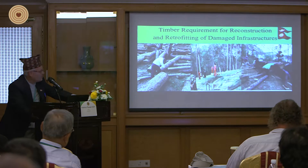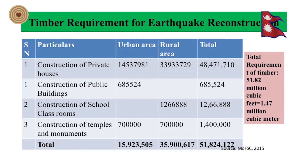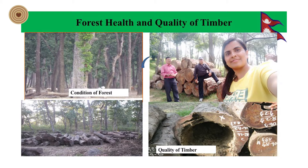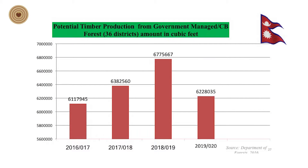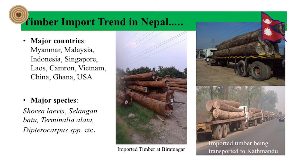Post-disaster recommendations address both rural and urban scenarios for volume requirements. To supply quality timber, we need to harvest hardwood before it decays. Nepal is currently importing wood from different countries including Myanmar, Malaysia, Indonesia, Singapore, Laos, Cameroon, Vietnam, China, and Ghana. If we manage our existing forests well, we can fulfill our domestic requirements and also sell timber to other countries. We need to revise our policy accordingly.